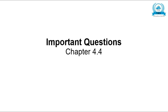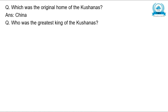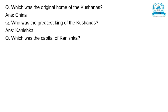Without wasting time, let us get into today's video. Which was the original home of the Kushanas? China. Who was the greatest king of the Kushanas? Kanishka. Which was the capital of Kanishka? Purushapura. Now we will go on to an important five mark question. In this chapter there is no important ten mark question — there are only three one mark questions and one five mark question.